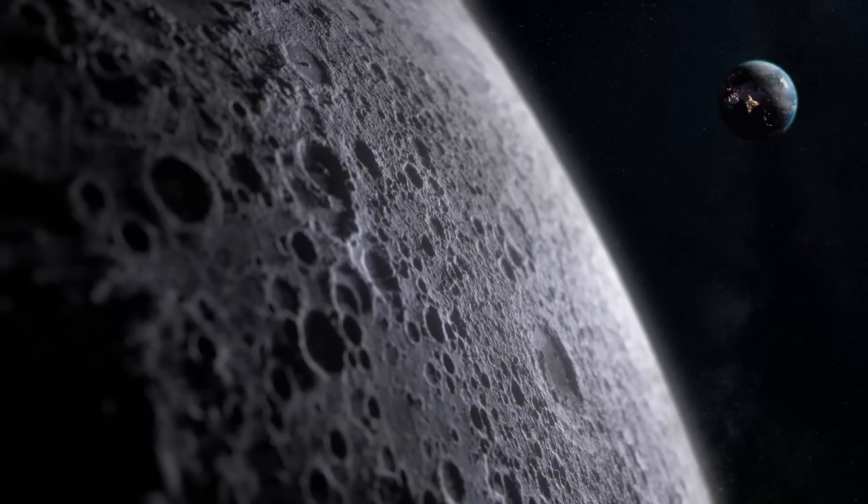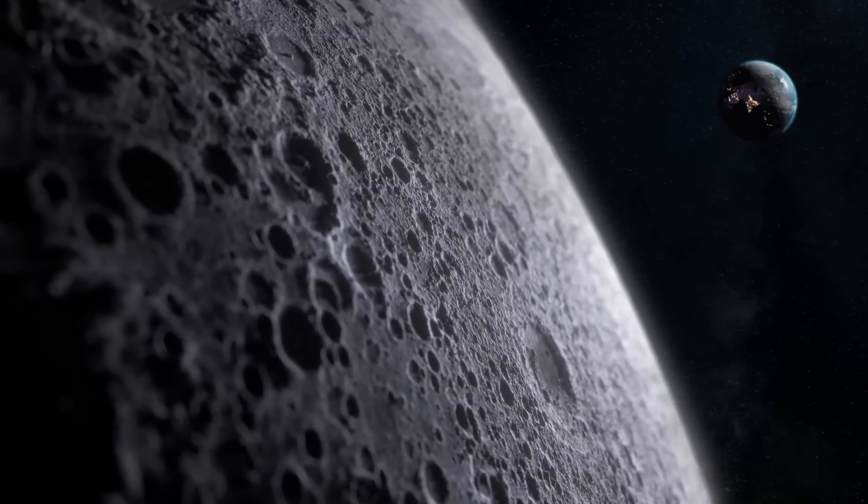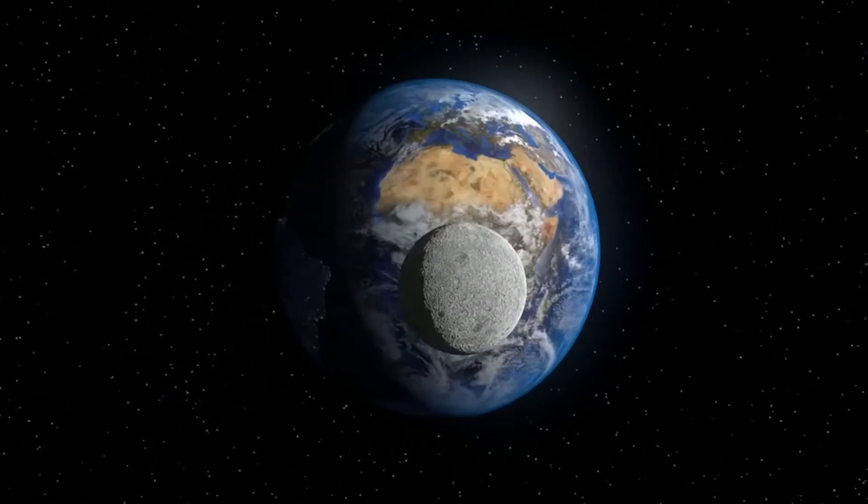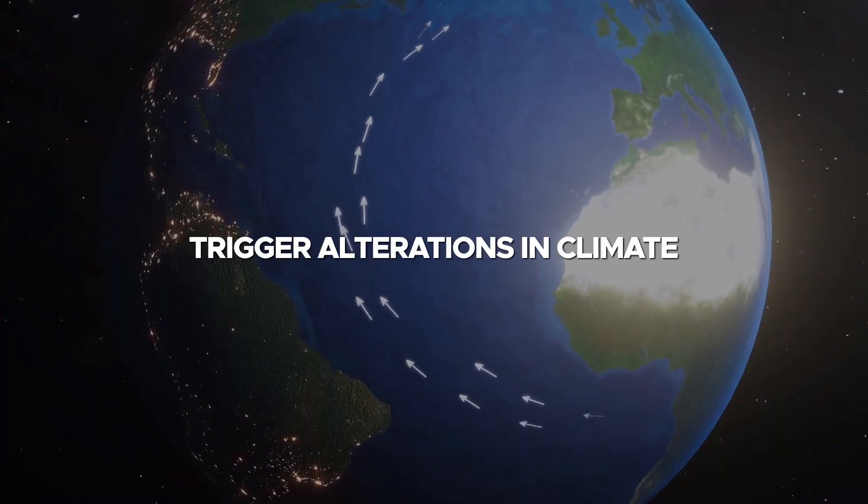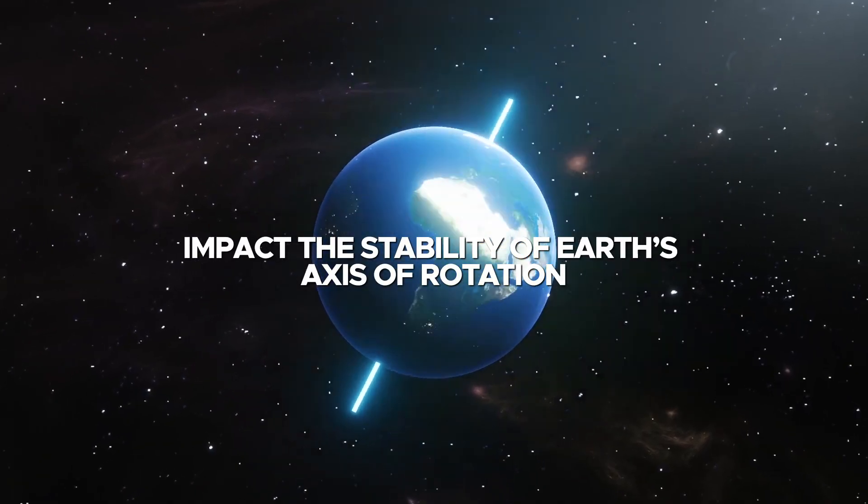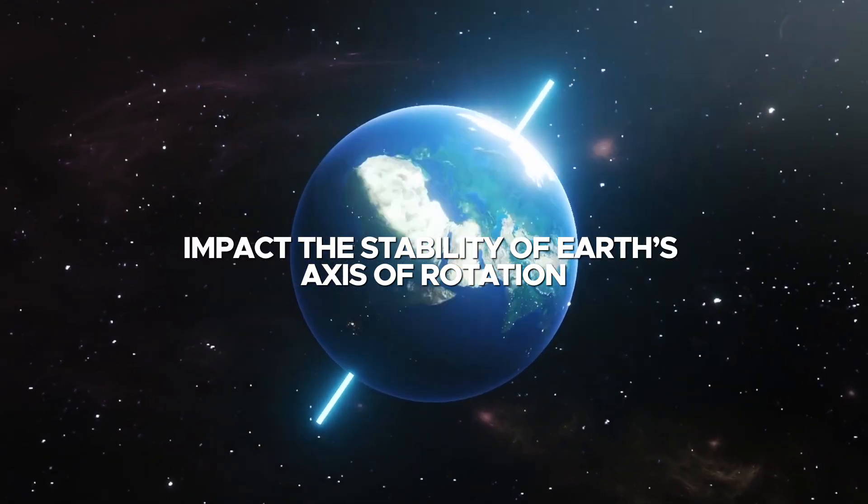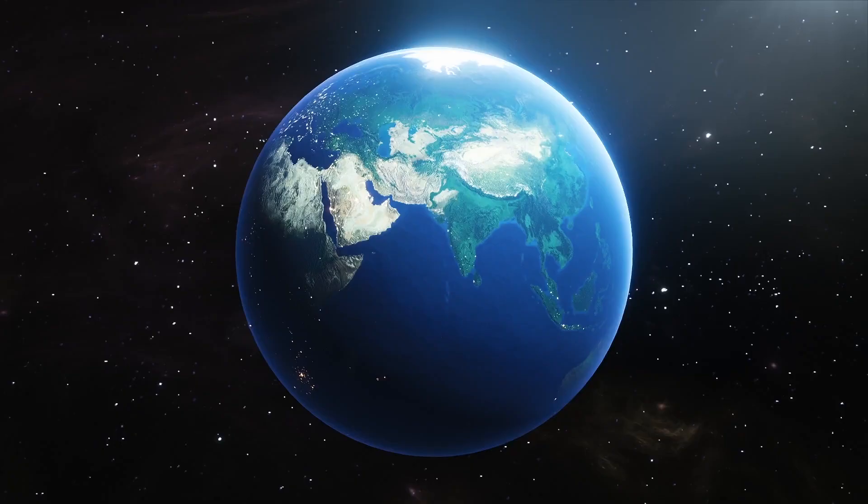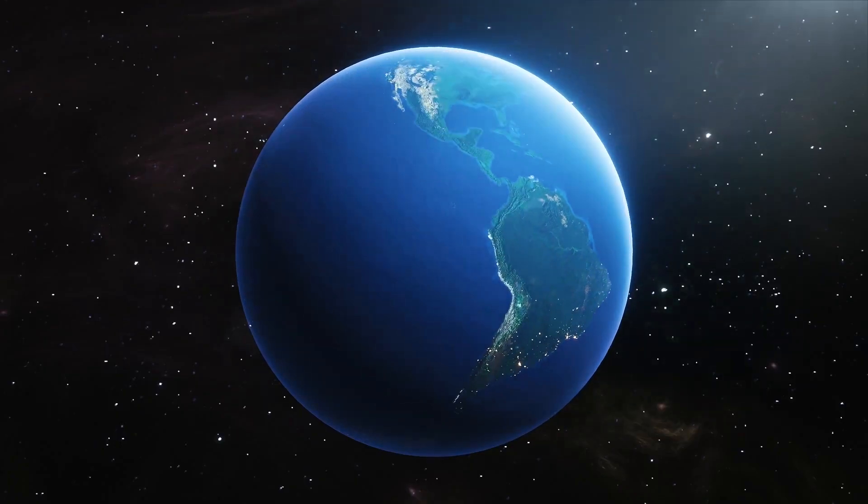Indeed, the gradual distancing of the moon from Earth carries several implications. As the moon extends its orbit, the diminishing gravitational pull it exerts on our planet might trigger alterations in climate and potentially impact the stability of Earth's axis of rotation. So delving into this phenomenon is crucial for understanding and preparing for potential future consequences on our planet.